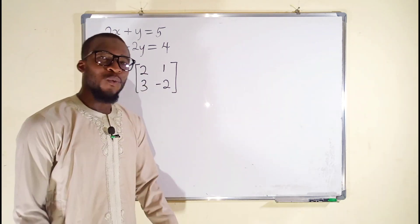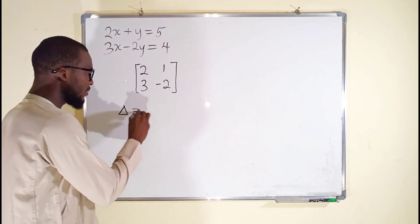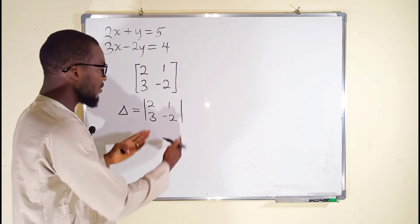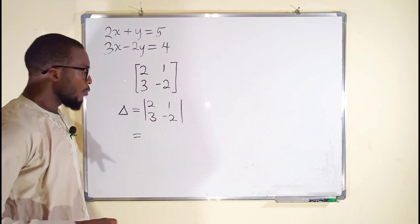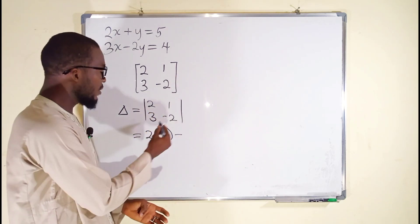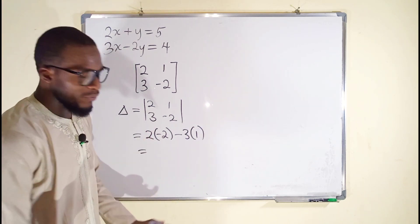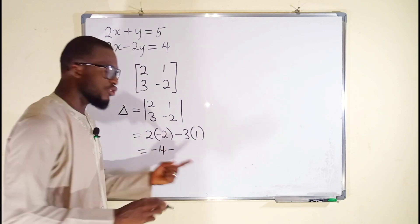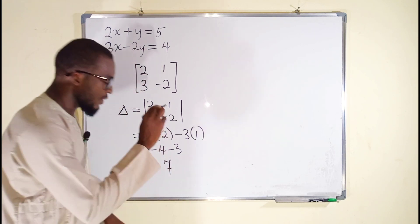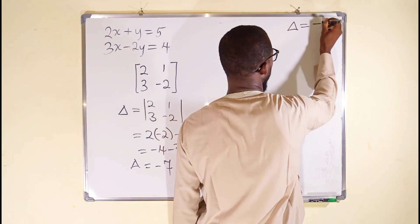Next, we are going to find the determinant of this matrix, which we call delta. We have 2, 3, 1, negative 2. Remember, this is the sign of a determinant using the absolute stroke. Multiply the leading diagonals: 2 multiplied by negative 2, then subtract 3 multiplied by 1. Simplifying: 2 times negative 2 is negative 4, minus 3 times 1 is 3. Negative 4 minus 3 equals negative 7. So the determinant is negative 7.